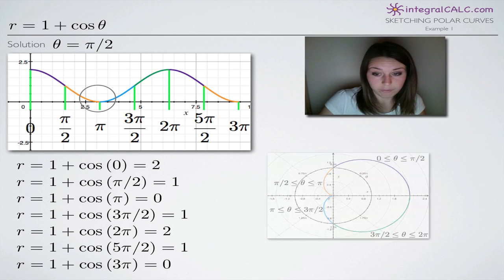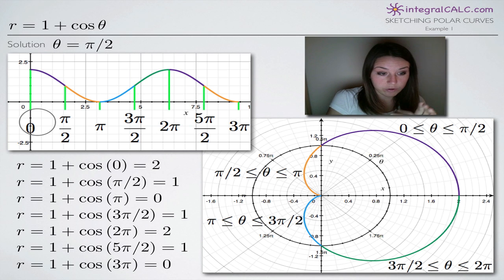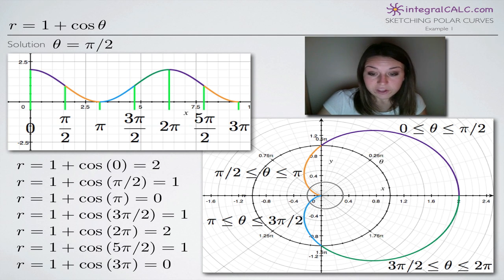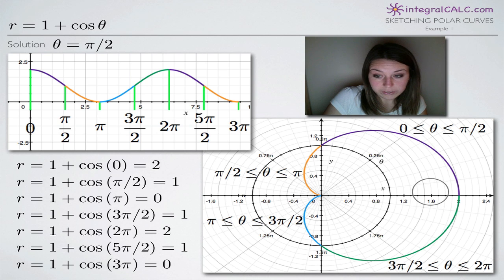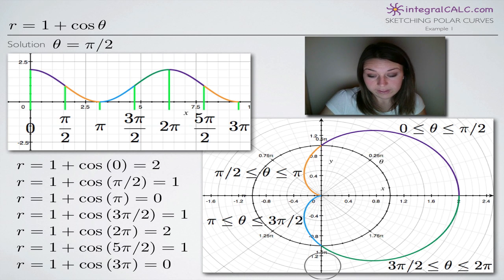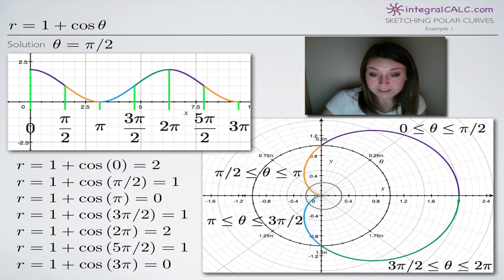Now we take this information and translate it onto the polar system. We move from xy coordinates into theta-r coordinates. Theta is our angle and r is our radius — the distance from the origin. On a polar graph, the angle 0 is along the x-axis. Moving counterclockwise, the angle increases: pi over 2 at the y-axis, pi back at the x-axis, 3 pi over 2 at the negative y-axis, and 2 pi back at the x-axis — just like the unit circle.